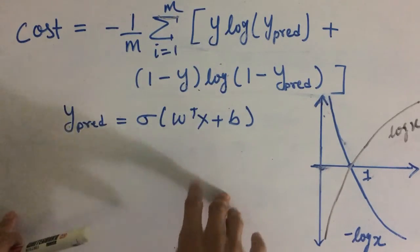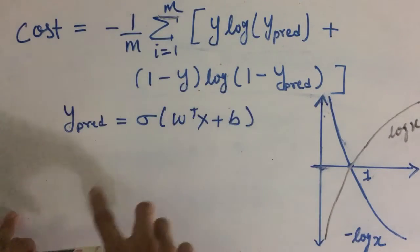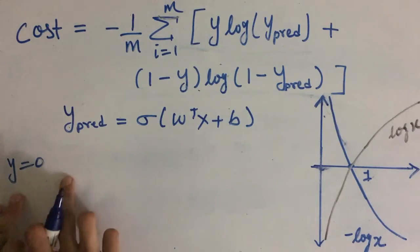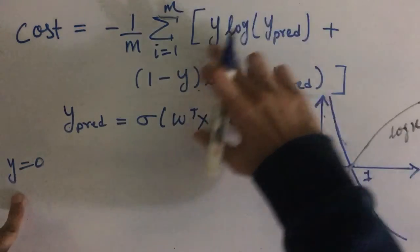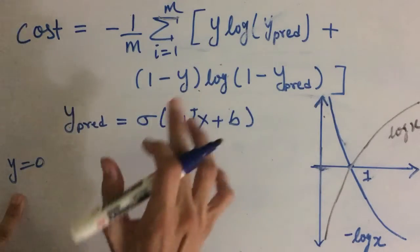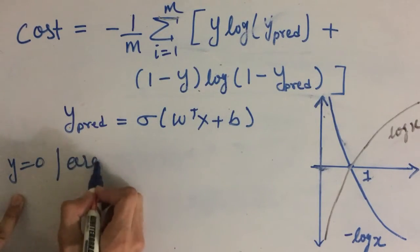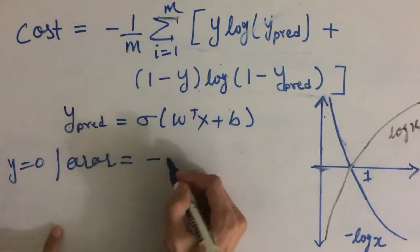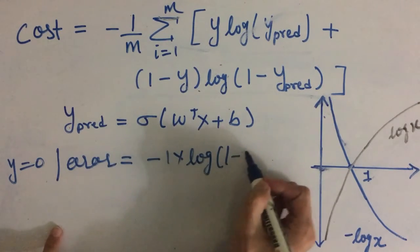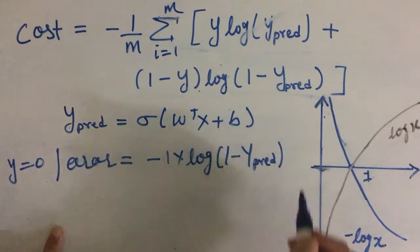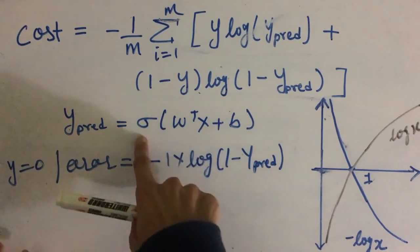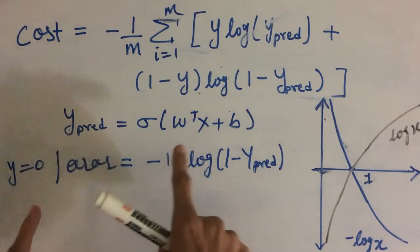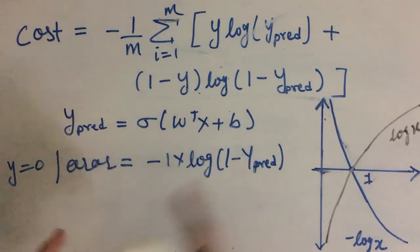Now in logistic regression, y can only take either 0 or 1 as its value. Let us say if y equals 0. If y is 0, then this term will be 0 so this won't exist. Then our error for one observation will be negative of 1 minus 0 multiplied by log of 1 minus ypred. Now ypred here is given by this equation and has a sigmoid in it. So its value will be in the range of 0 to 1.